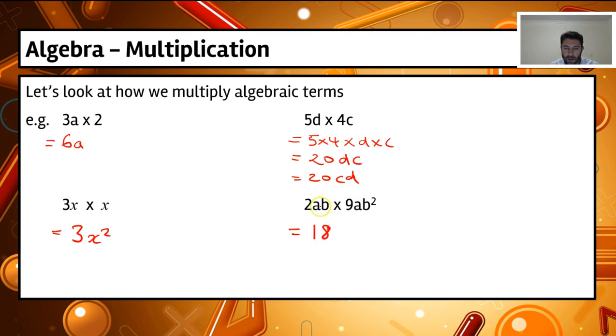And then if we have a look at the letters separately, we've got a times a, so we can actually simplify that to be a squared.